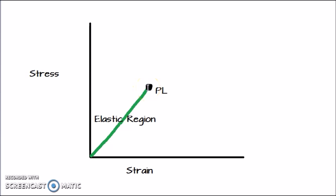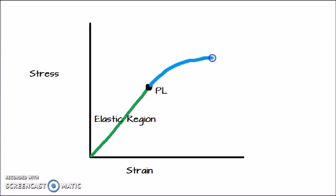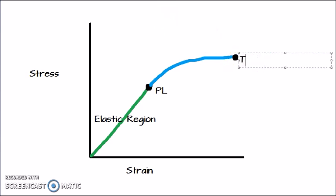Now I will be choosing blue color. From the proportional limit onward there will be a curved line that ends here. This blue curved line is the plastic deformation or plastic region of the stress-strain curve. This line would end at a point we call T — the fracture point — labeled as T.